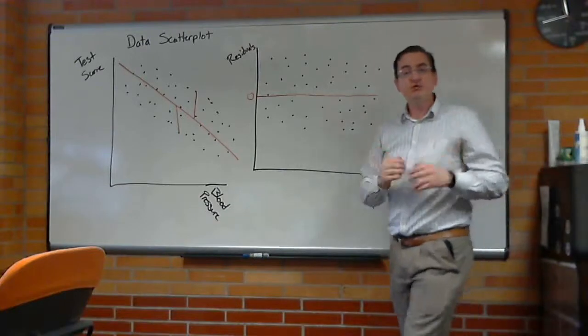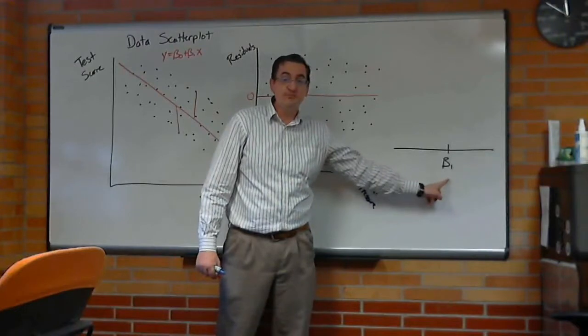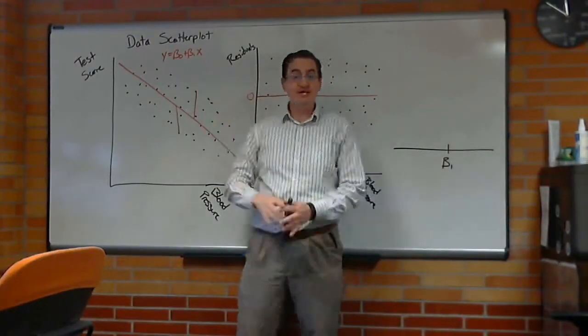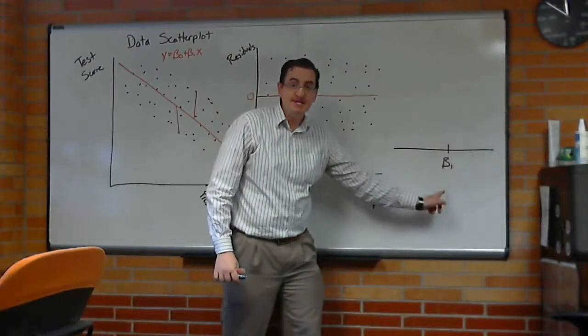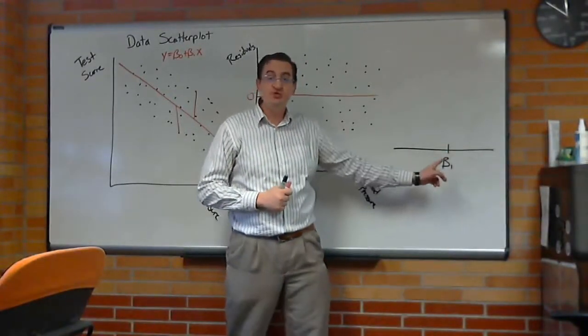There is a third plot, which is really important to talk about. It's based on the true value of the slope. We call it beta 1. Remember the equation, y equals beta naught plus beta 1 x? So there exists this true slope. And the null hypothesis says that slope should be zero.